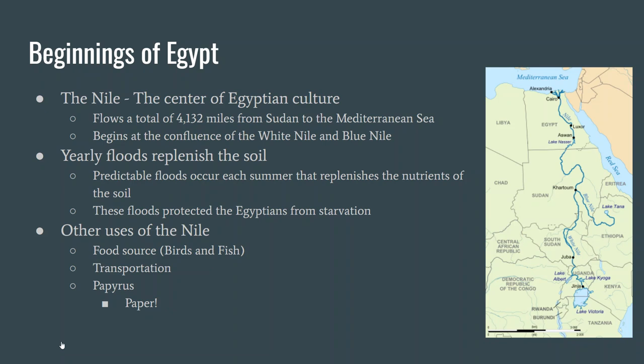The Nile is really important because it floods predictably. Most of the water comes from the Blue Nile — from heavy rains that happen in Ethiopia. They're yearly rains, so the flooding is very predictable. These floods protect the Egyptians from starvation because the floodwater replenishes the soil and gives it new nutrients. The Nile is also used for transportation, as a food source — birds near it, fish in it.